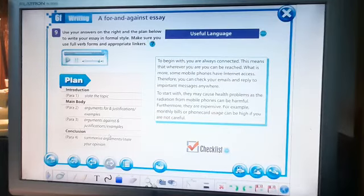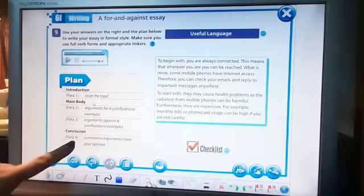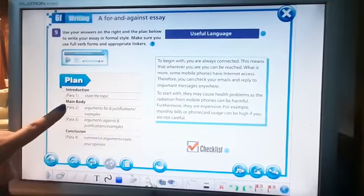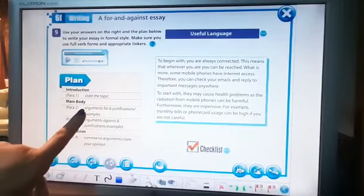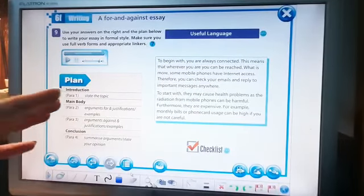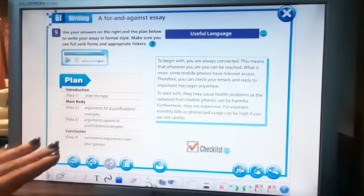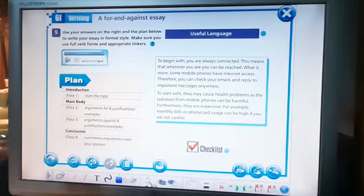Please remember that your essay should always be in formal style. It is a for-and-against essay. And thus, every kind of essay we have said that we need formal style. Don't forget your plan, to follow your plan. Paragraph 1: to state the topic. Paragraph, the main body, is going to consist of two paragraphs. The first one: arguments for, justification, examples. Paragraph 3: arguments against, justification and examples. And paragraph 4: to summarize arguments and to state your opinion.